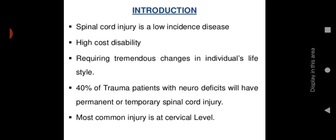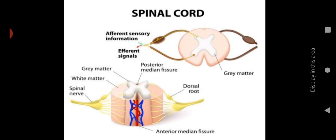40 percent of trauma patients with neurological deficits will have permanent or temporary spinal cord injury. Those who suffer head injury or head trauma — 40 percent of them have spinal cord injuries. The most common injury is at the cervical level, meaning in the neck region. This is a diagram of part of the spinal cord.